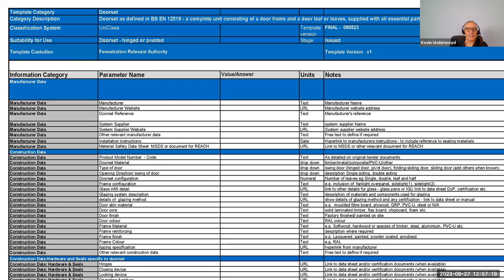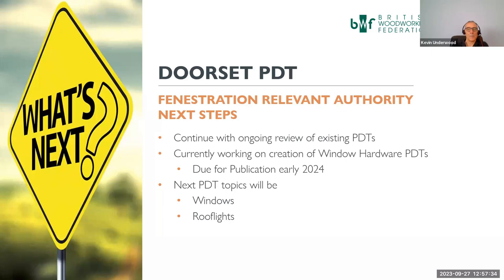A snapshot of what the door set product data template looks like — it's in different colours to the ones Carl showed from CIBSE but contains the same form of information. For next steps, the Fenestration Relevant Authority will continue with the ongoing review of the existing PDTs. They are currently working on the creation of a product data template for window hardware, due to be published soon, and the next PDT topics will be for windows and roof lights.